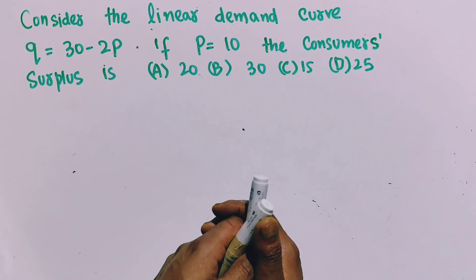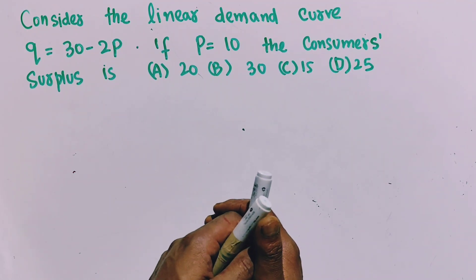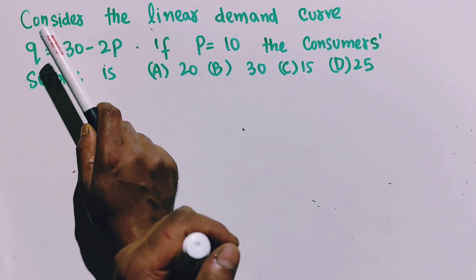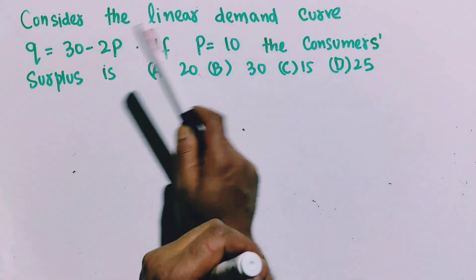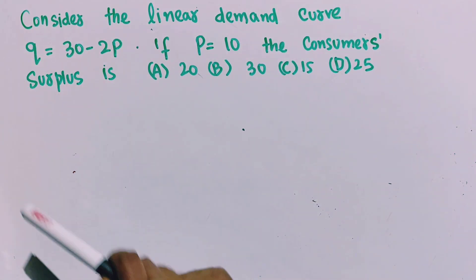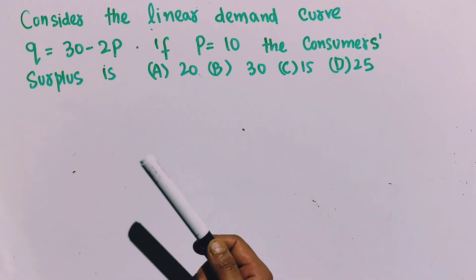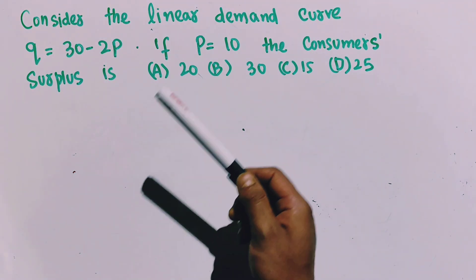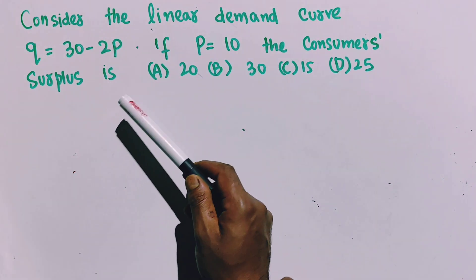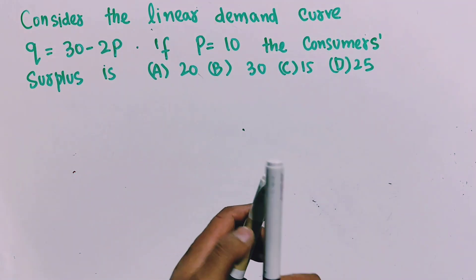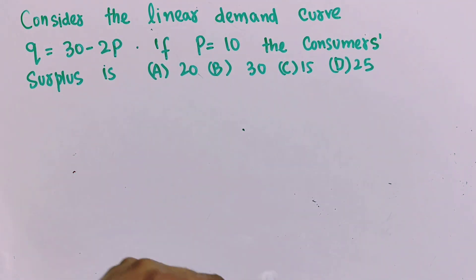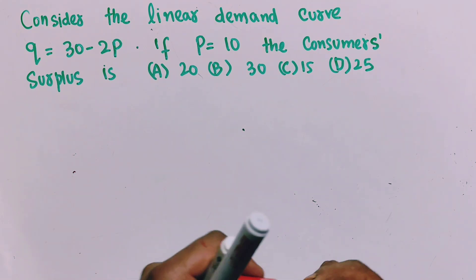In this video we will learn how to find out the consumer surplus from a given demand function. The question is: consider the linear demand curve Q = 30 - 2P, where Q denotes output and P denotes price. If price is equal to $10, we need to find out the consumer surplus. Options are given and we need to find out the correct option.